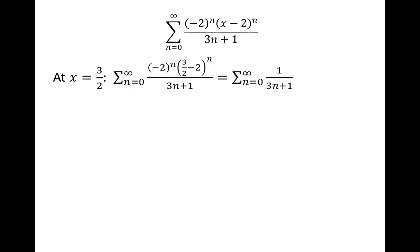When x is 3 halves, we replace x up here by 3 halves, we end up with 3 halves minus 2, which is negative 1 half. Negative 2 to the n times negative 1 half to the n reduces to 1 to the n, which is just 1. The denominator does not change.